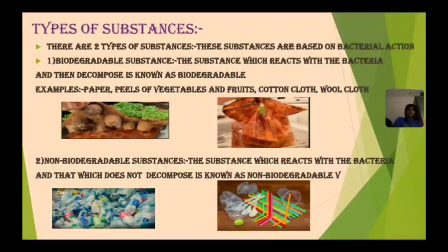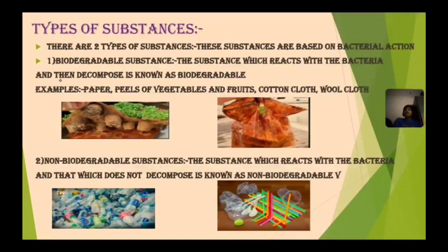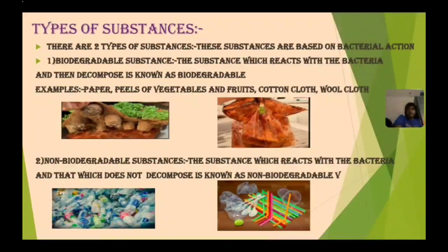There are two types of substances based on bacterial action. One is biodegradable substance — the substance which reacts with bacteria and then decomposes is known as biodegradable. For example, waste thrown away decomposes into soil. The second type is non-biodegradable substance — the substance which does not decompose even with bacterial action is known as non-biodegradable.